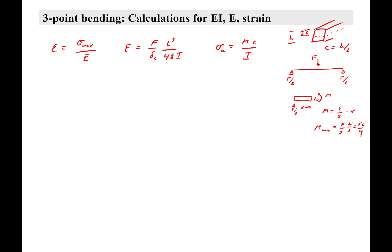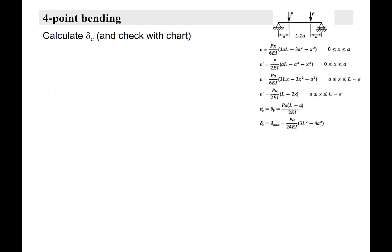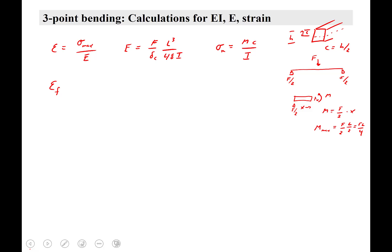So, if I plug those back in, I get that the strain, the flexural strain, is equal to, instead of sigma max, you can do F L over 4. Instead of E, I can do F L cubed—I'm inverting it—times 48 over L C.